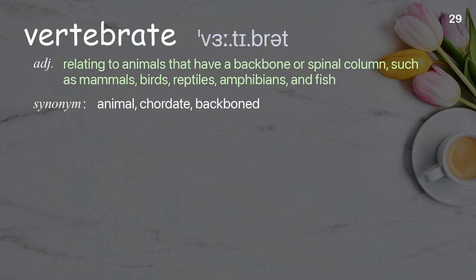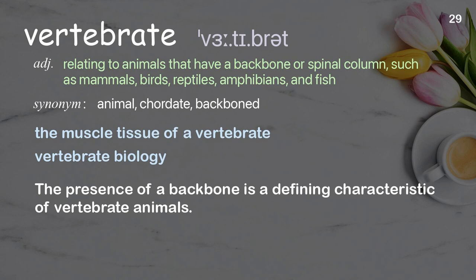Vertebrate: relating to animals that have a backbone or spinal column, such as mammals, birds, reptiles, amphibians, and fish. Examples: the muscle tissue of a vertebrate. The presence of a backbone is a defining characteristic of vertebrate animals.